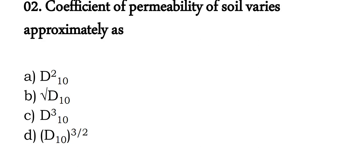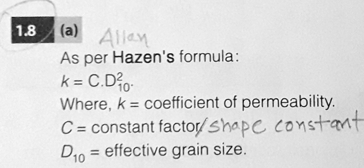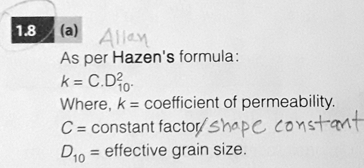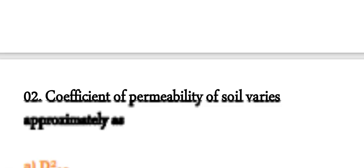Second question: the coefficient of permeability of soil varies approximately as — options are d10², √d10, d10³, or d10^(3/2). The correct answer is d10². As per Hazen's equation, the coefficient of permeability k equals C × d10², where k is the coefficient of permeability, C is the shape constant, and d10 is the effective grain size. So permeability is proportional to the square of d10. Correct answer, option A.